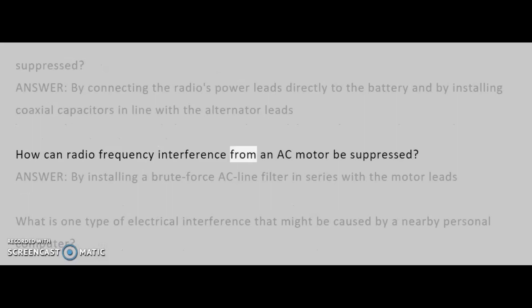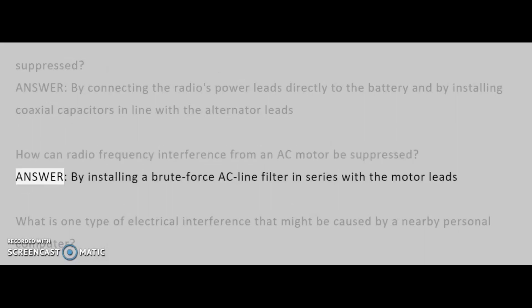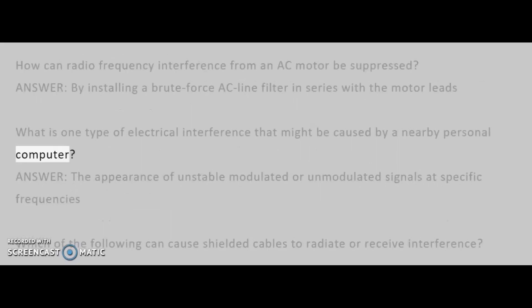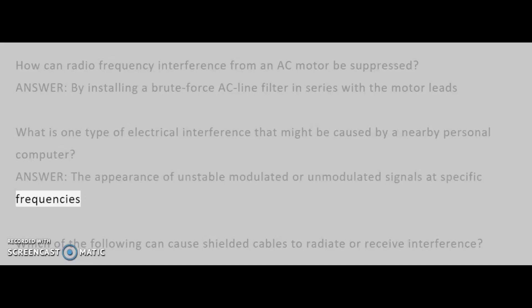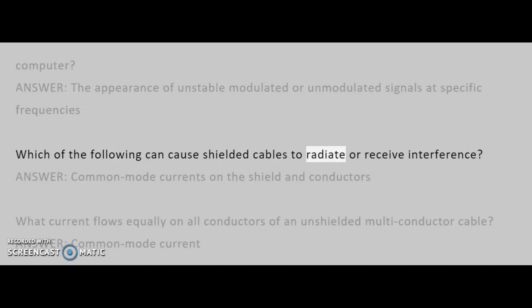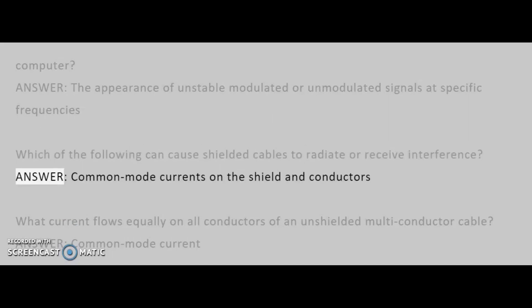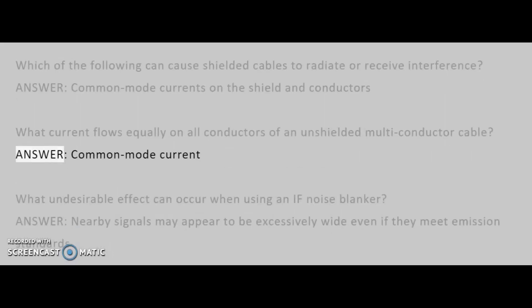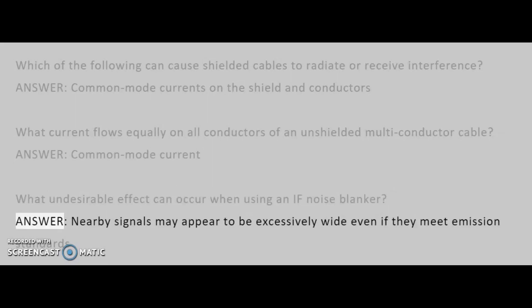How can radio frequency interference from an AC motor be suppressed? Answer: By installing a brute force AC line filter in series with the motor leads. What is one type of electrical interference that might be caused by a nearby personal computer? Answer: The appearance of unstable modulated or unmodulated signals at specific frequencies. Which of the following can cause shielded cables to radiate or receive interference? Answer: Common mode currents on the shield and conductors. What current flows equally on all conductors of an unshielded multi-conductor cable? Answer: Common mode current. What undesirable effect can occur when using an IF noise blanker? Answer: Nearby signals may appear to be excessively wide even if they meet emission standards.